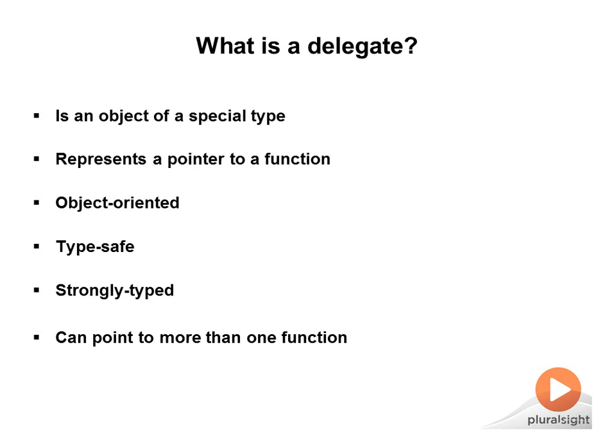All the functions that a delegate points to are collectively known as the delegate's invocation list. A delegate executes all the methods in its invocation list serially, in the order in which they were added. If the methods return a value, the caller sees only the return value of the last method in the invocation list — all other previous values are lost.